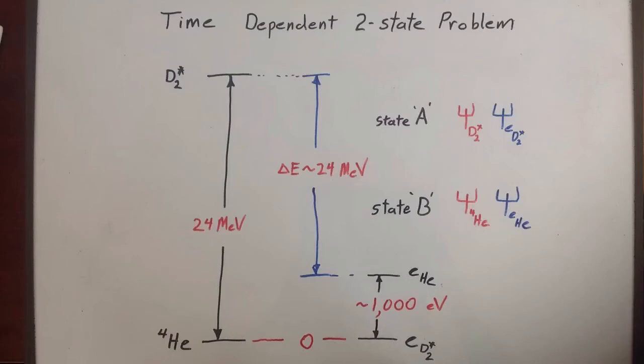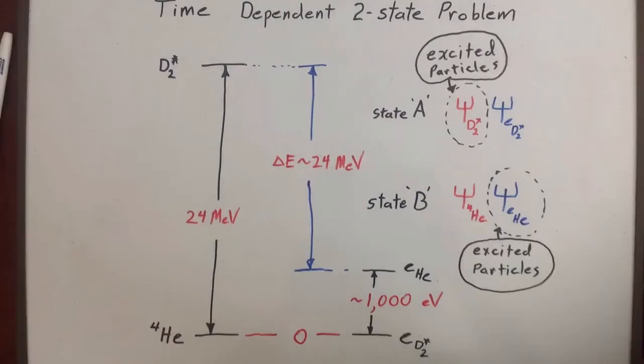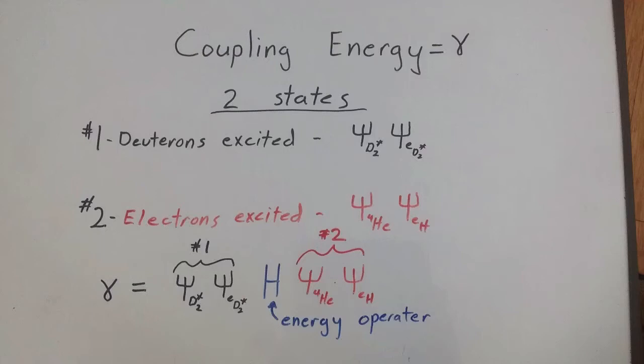State A with the deuterons excited, and state B with some excitation energy transferred to the electrons. And recall that this just means that the deuterons will be found mostly in the intermediate state of D2 star, but some helium after one oscillation of probability. All we need now is the coupling energy between the two states.